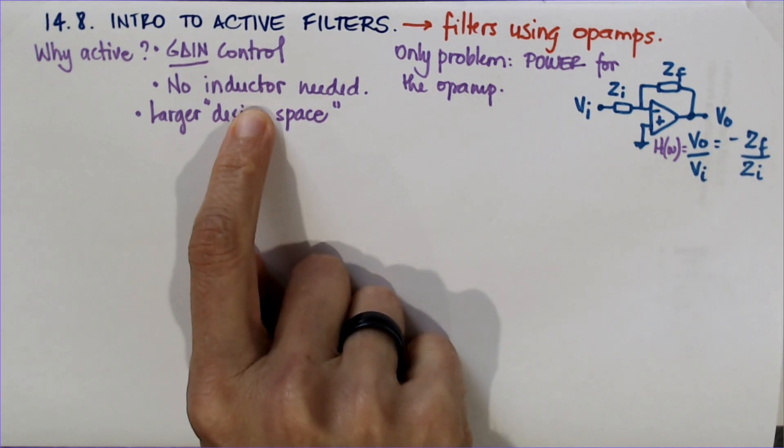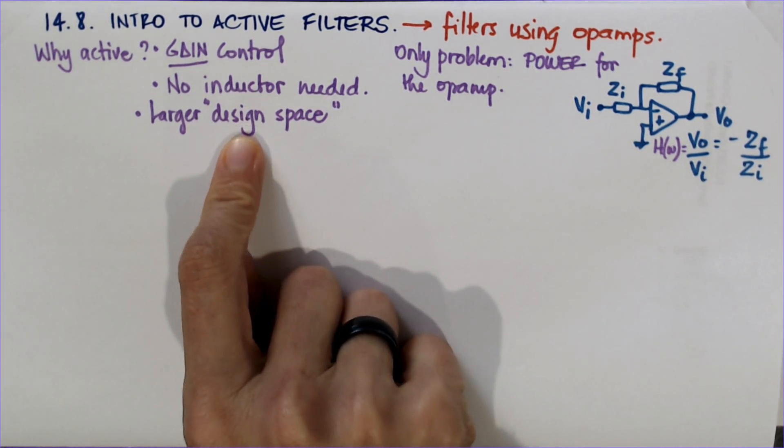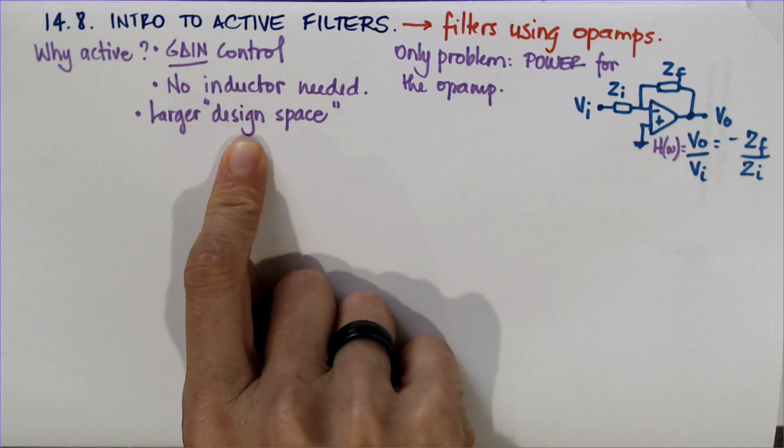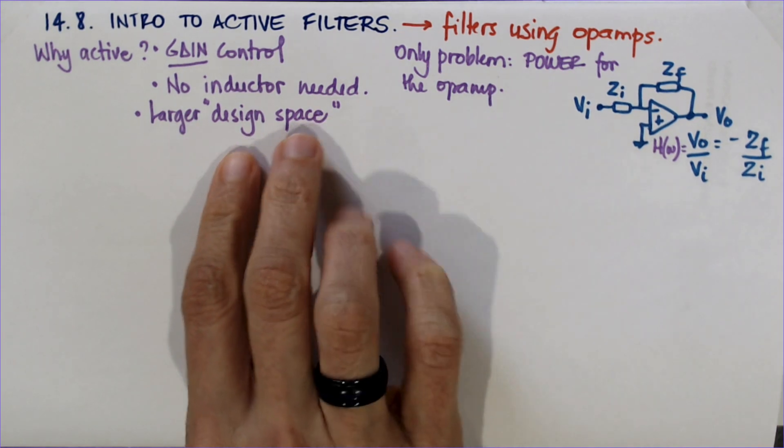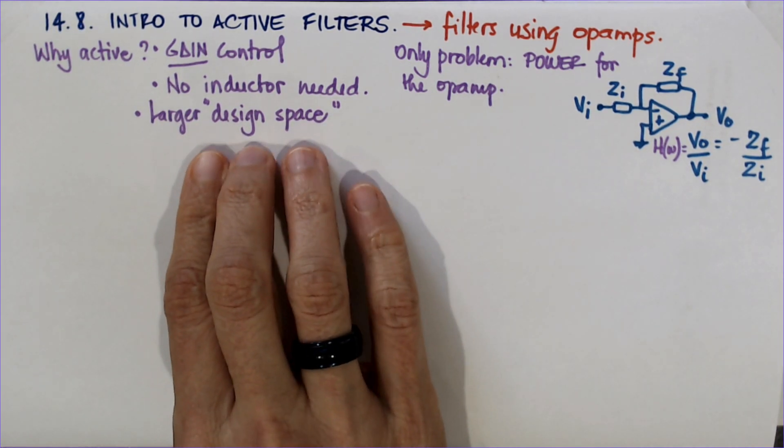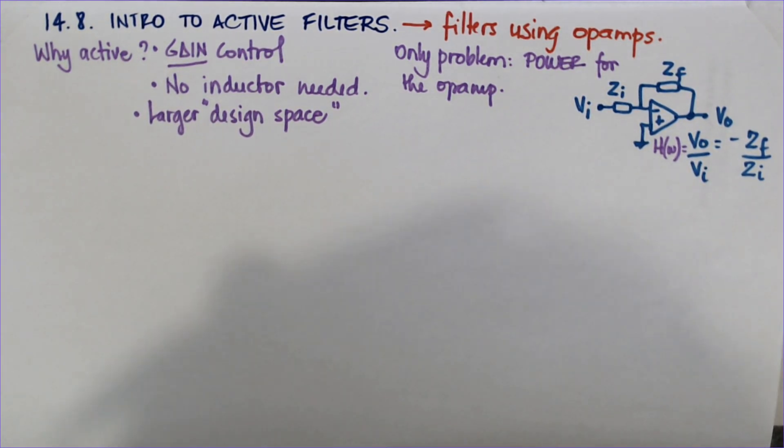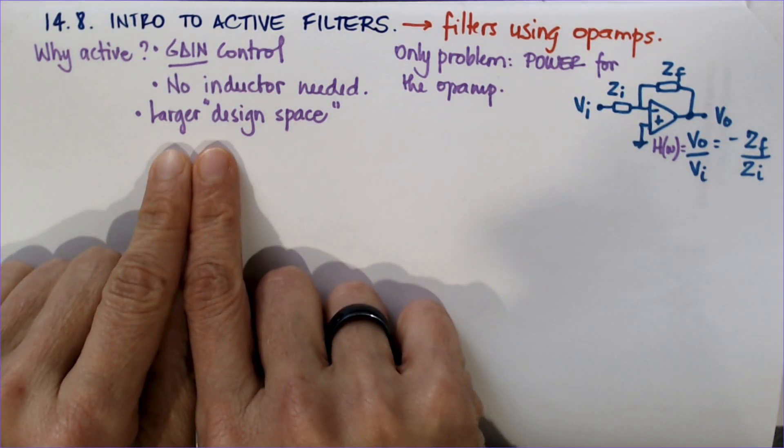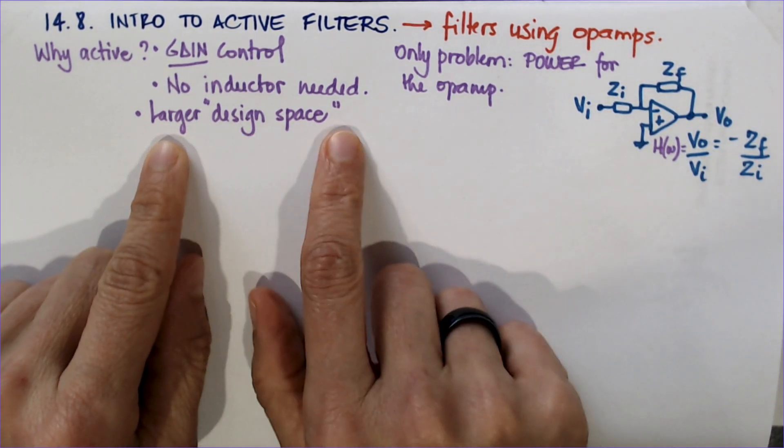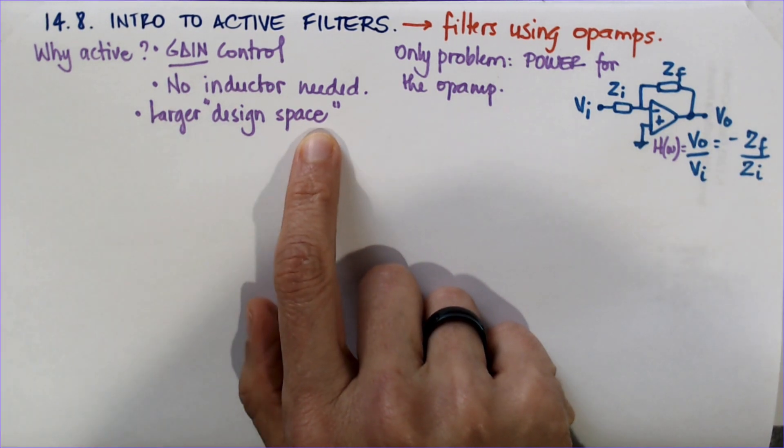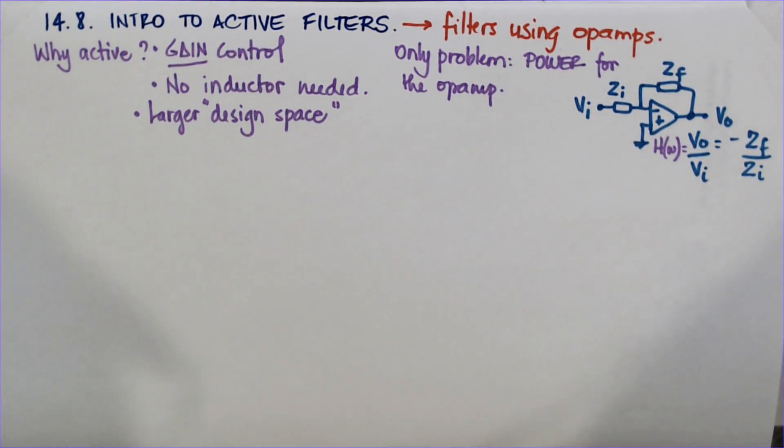There's often no inductor needed, even though you may see some active filters where people do put inductors, but inductors are super expensive and hard to find. And the last advantage is that it's a larger design space. That means you can put several filters back to back, several low-pass filters actually, and make much steeper band rejects. So the frequencies you're rejecting will have a 0.0001 gain, like a minus 100 dB gain, as opposed to a passive filter.